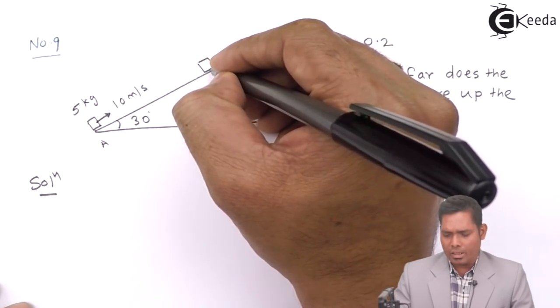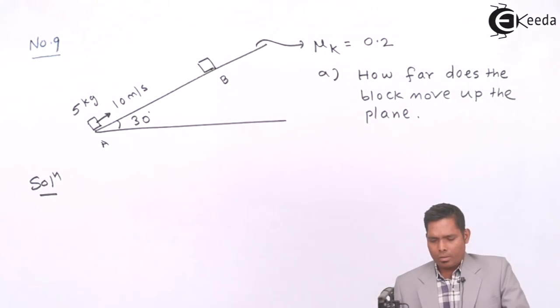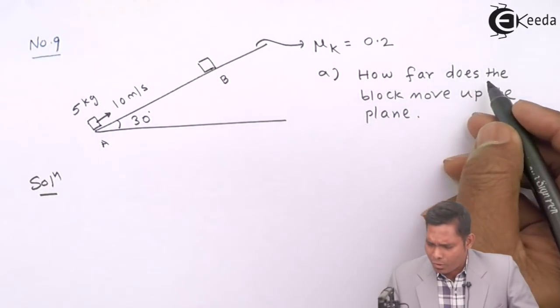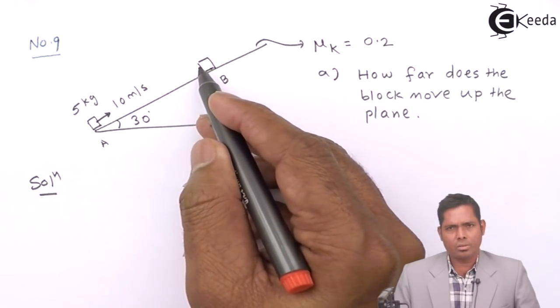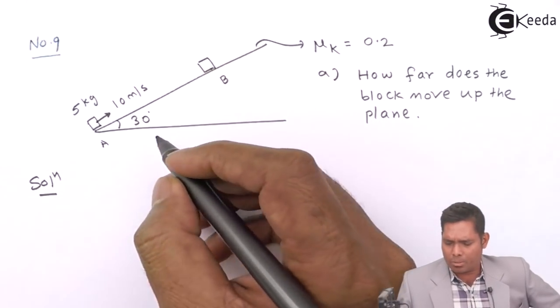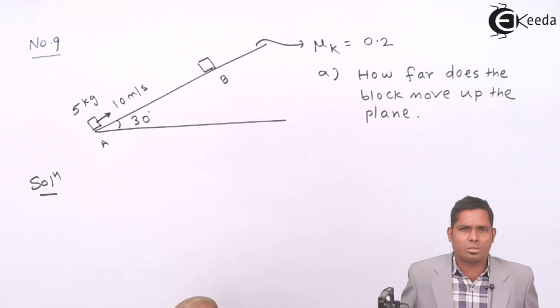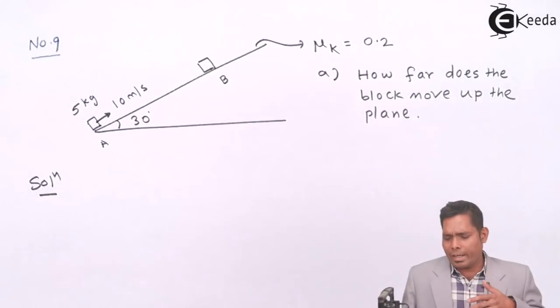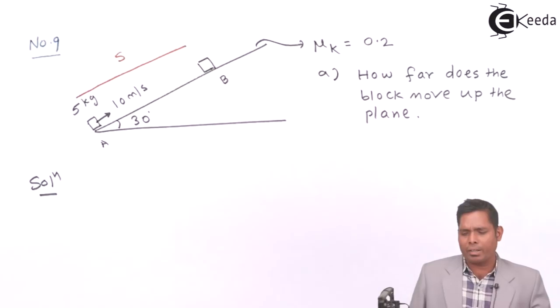Now I have to find how far does the block move up the plane, means I have to find the distance. To find the distance, I can use the kinematical equation because the body is moving in a straight line. For any straight line motion, I have got three standard kinematical equations. So I will use one of them where S is involved. So suppose that this distance is S, that is equal to every distance that I have to find.